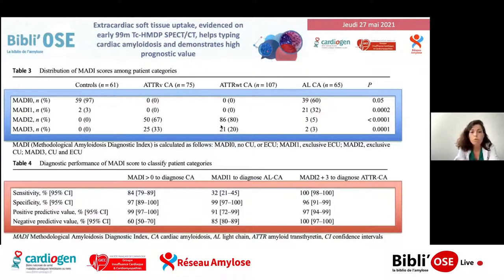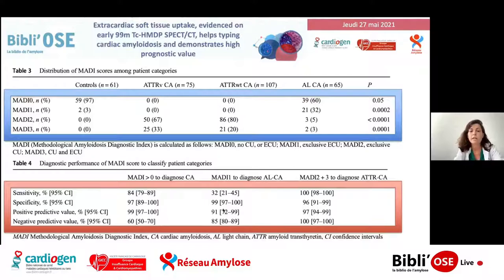Ce qu'on peut voir avec ces résultats, c'est que les scores MADI 1 sont exclusivement présents dans l'amylose AL. Quand on a une fixation extracardiaque — score MADI 1 — on a une spécificité à 99% pour l'amylose AL, avec une valeur prédictive positive de 91%. En revanche, quand on a un score à 2 ou 3, c'est-à-dire fixation cardiaque unique ou fixation cardiaque et extracardiaque, on a une spécificité importante pour le diagnostic d'amylose à transthyrétine.